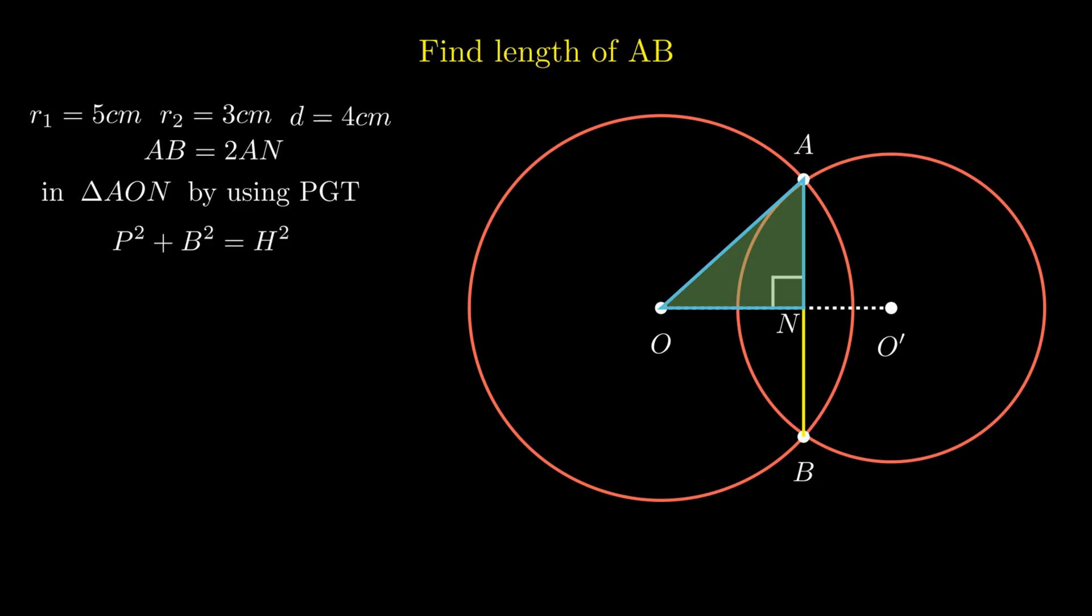On substituting the corresponding values of hypotenuse, base and perpendicular we get ON square plus AN square equal to 5 square. Since this equation can't be simplified as variable ON and AN are different.